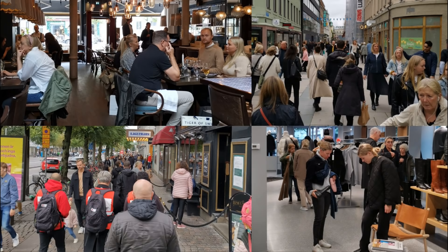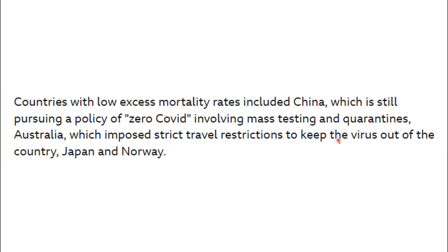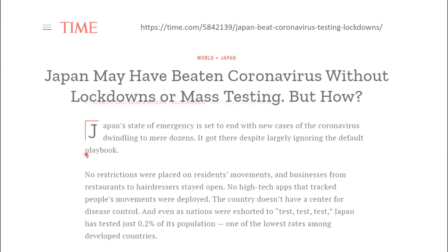Coming to the end of the BBC article now. They say countries with low excess mortality rates included China — I'd be a little careful believing all that data — and they talk about zero COVID as if that's the reason. They also mention Australia, which had a really hard 2019 flu season that was a huge spike people didn't understand, so there are question marks around Australia. But then they mention Japan as an example, and I thought — you've just stepped into a bear trap.